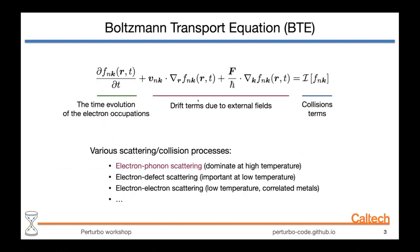The key equation behind all of these calculations is the Boltzmann transport equation, or BTE. The BTE is basically a statement about the conservation of the number of particles. The key quantity here is f_nk, which represents the electronic occupation that changes with time, labeled by band index n and electronic momentum k. The BTE describes the time evolution of these occupation factors, and from them we can extract transport quantities.